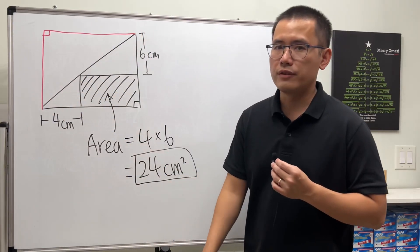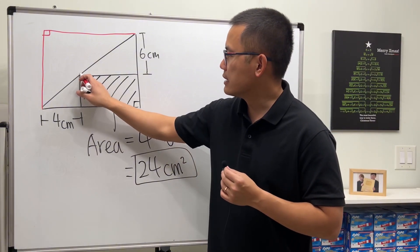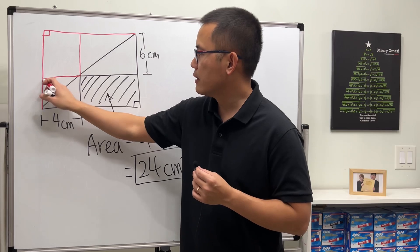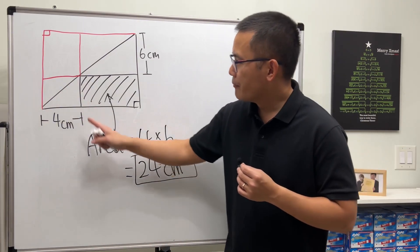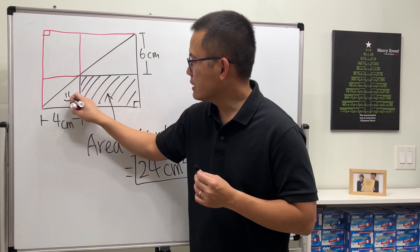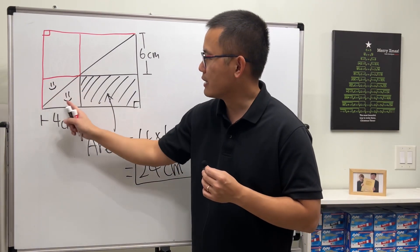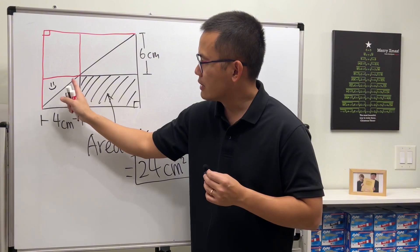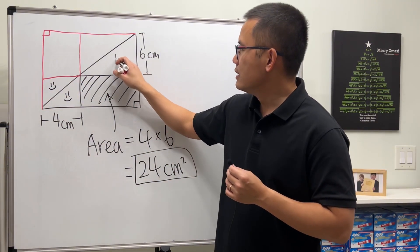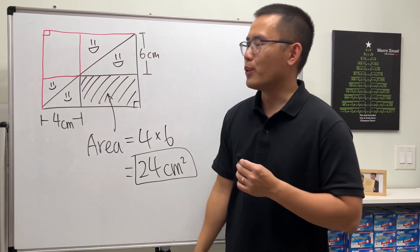Then we can do the following. I'm going to extend this line here and also extend this line here. If you look at the bottom portion, this part and that part will have the same area, because it's just a rectangle cut by its diagonal. So this and that will be equal. Likewise, this part here and this part here will also be equal.